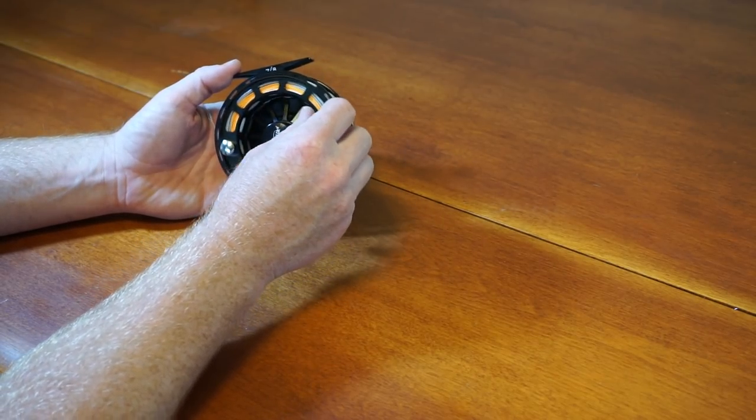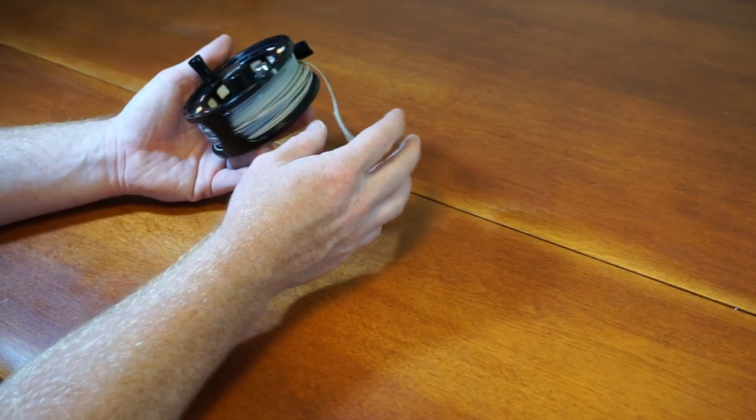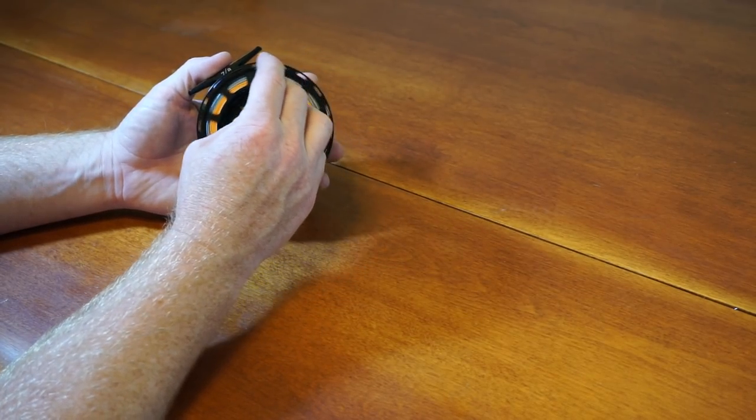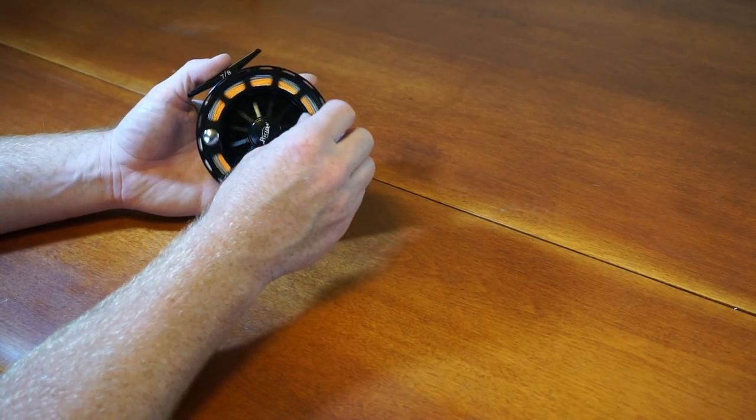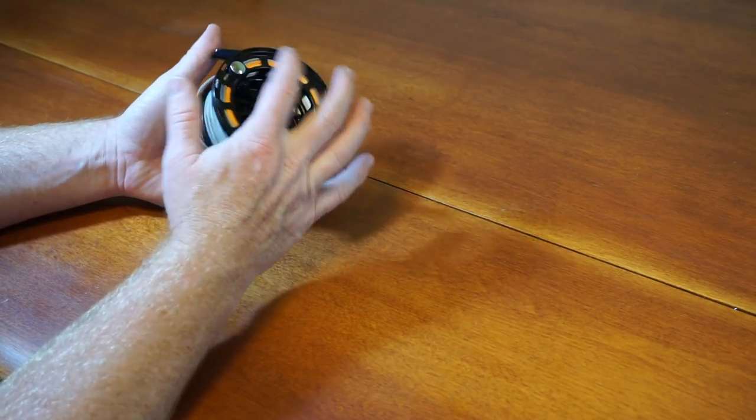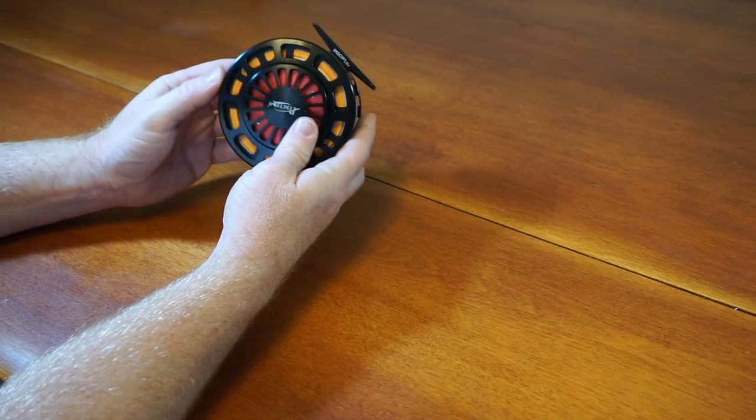So great deal for this reel. Very smooth. The only kind of hang up right there is because of the line. There is a little hang up, but that's the line. You check out my initial review of this reel and you'll see it was very smooth before I put the line on. But the line right now is kind of sticking. I kind of overfilled it a little bit. Put too much backing probably.